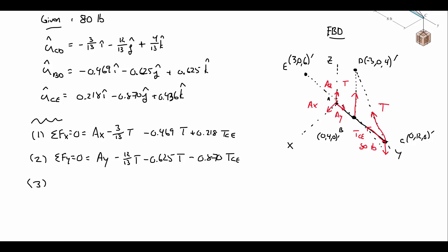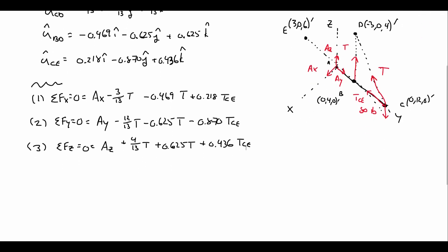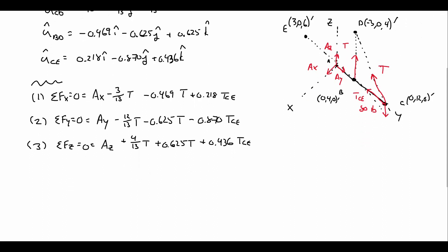I now have five unknowns but only three equations, so I can't solve for anything yet. I need to keep writing equations. I'll write a vector moment equation. Taking moments about A is the best choice here because it will eliminate the three unknowns AX, AY, and AZ. However, there are four forces whose lines of action do not pass through A that I must account for.